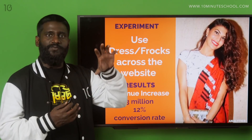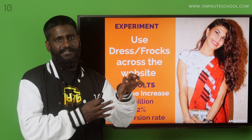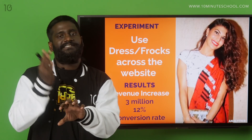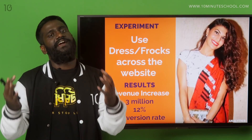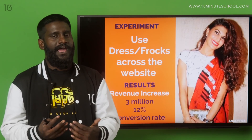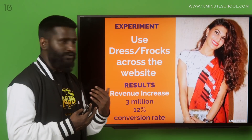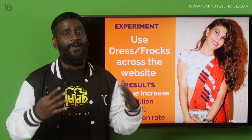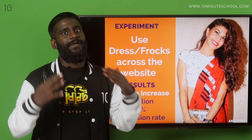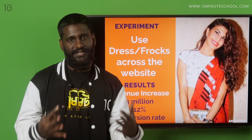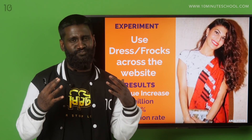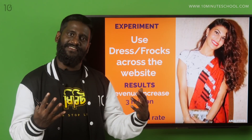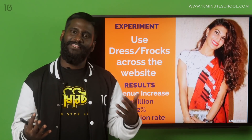We created one control which only had 'dresses' and one variant which had 'dresses / frogs.' We did this in every place where 'dresses' appeared on the site. And you know what? We were able to improve our conversion — 30 million Sri Lankan rupees, and the conversion rate improved by 12%. That's a big deal, that's a big number.